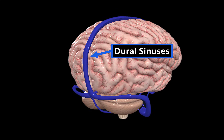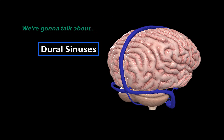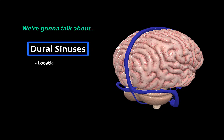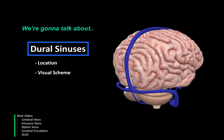Let's go ahead and talk about the anatomy of the dural venous sinuses. We're going to do that by first going through the location of the dural sinuses — basically where they are in comparison to the meninges — then we're going to visualize the dural venous sinuses schematically so that it's easier to remember them. In the next video we're going to go through the cerebral veins, the emissary veins, and the diploic veins.